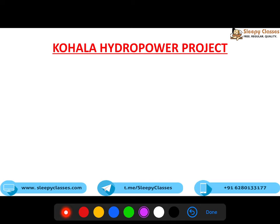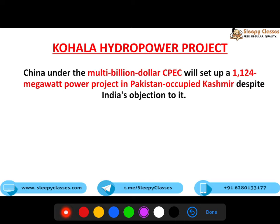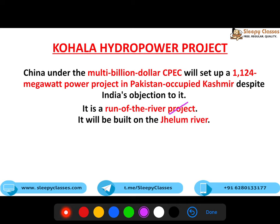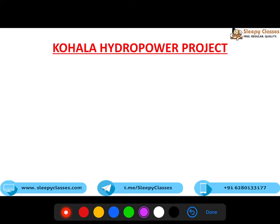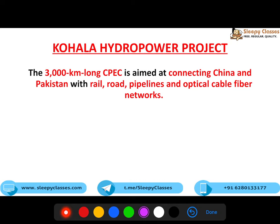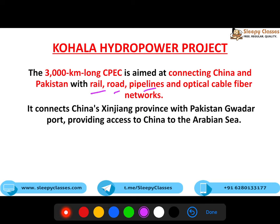Next is regarding Kohala Hydro Power Project. Ye Pakistan Occupied Kashmir mein ek project hai - it is a multi-billion dollar project aur China-Pakistan Economic Corridor (CPEC) ka part hai. Ye 1,124 megawatt power project hai. India is obviously objecting to it, kyunki India kehta hai ki woh humara part hai - toh Pakistan aur China kaise wahan hydro power project bana sakte hain. It is a run-of-the-river project on Jhelam river, aur more than 5 billion units of clean and low-cost electricity produce karega for consumers in Pakistan.